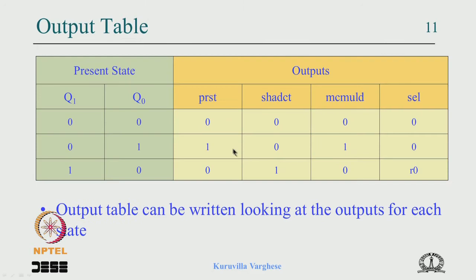The next state table and output table are equivalent to the state diagram because all the information is there. So the moment you draw the state diagram the design is done — the rest is a kind of automatic process which the tools can do very well.